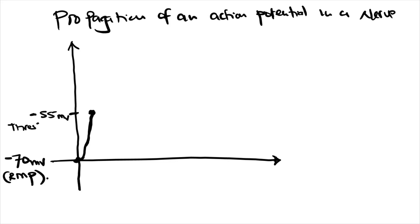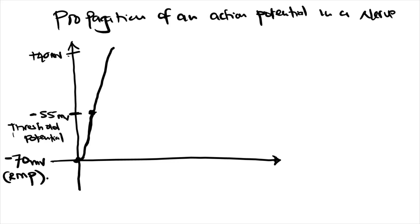Negative 55 millivolts is called the threshold potential — the potential at which an action potential is propagated. At the threshold potential, voltage-gated sodium channels open. These are numerous and fast-opening; they shift the membrane potential from negative 55 to about positive 40 millivolts.